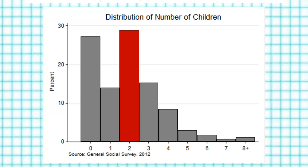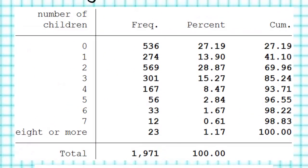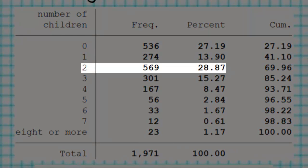Now, one thing to note in this example is that there are really 2 modes here — a mode of 0 and a mode of 2. I know those columns are slightly different from each other, so technically 2 is the mode because it's taller than 0, but they're very close. Looking at the table at the top, the category labeled 2 has 28.87% of all respondents, making it technically the mode as the largest value.